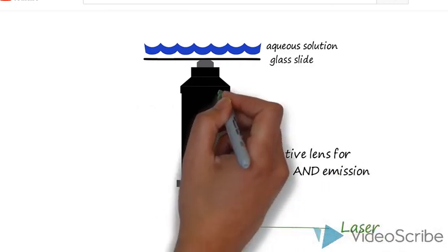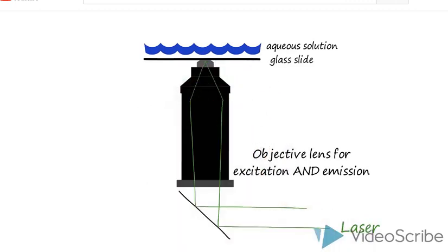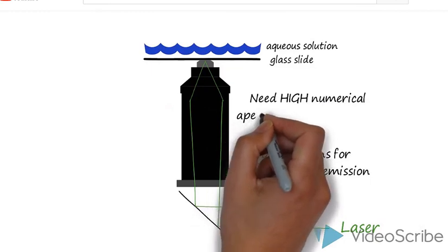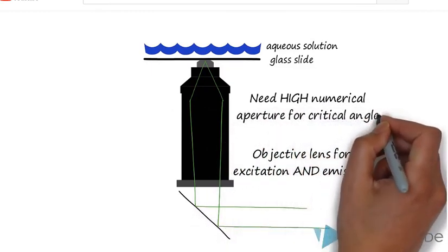Excitation light enters the objective lens off-center so that it can be sent at an angle to hit the glass-water interface. Because the critical angle of glass and water must be exceeded, O-TIRF only works if the lens has a high numerical aperture of at least 1.34.